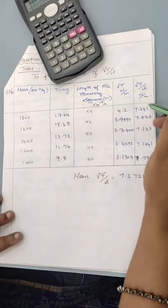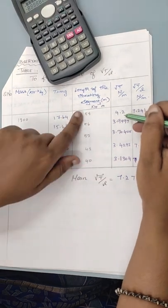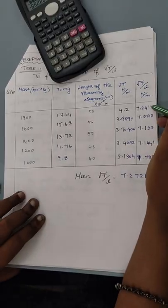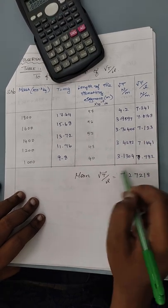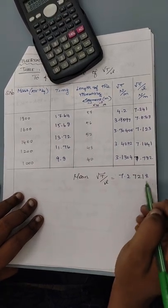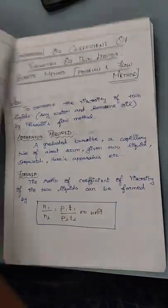I have calculated the rest of the thing. So from here we can find root T by L, root T divided by L value. So by adding and dividing to find out the mean, we get 7.27218 for root T by L value.